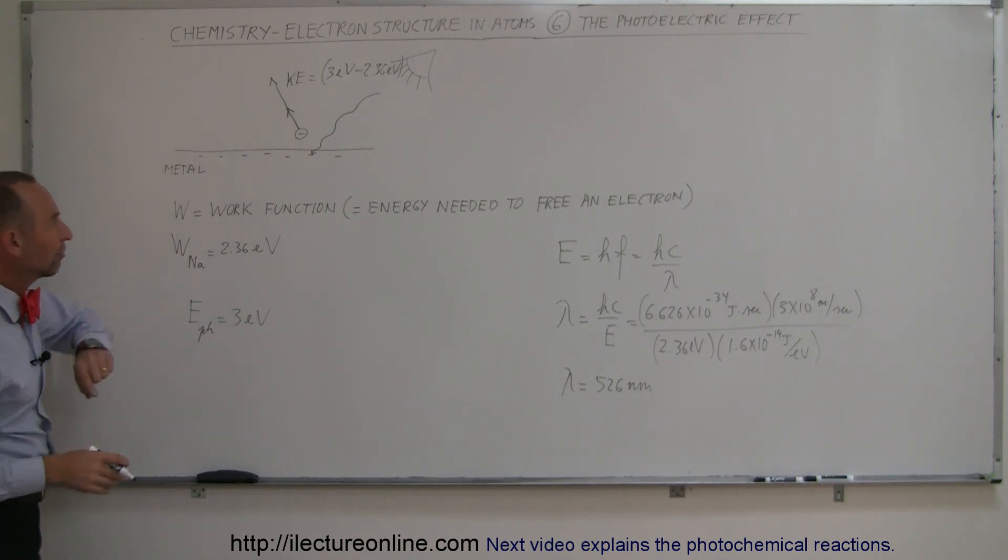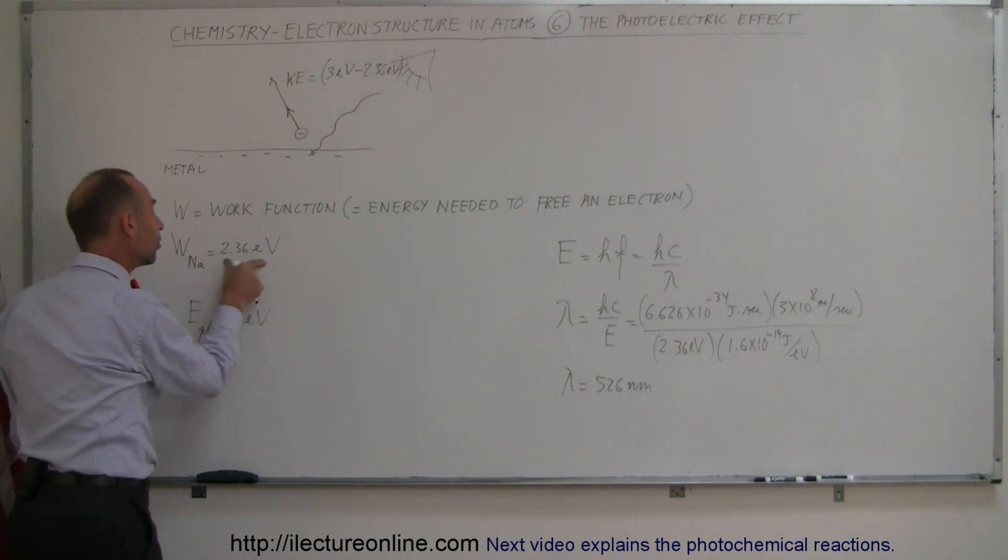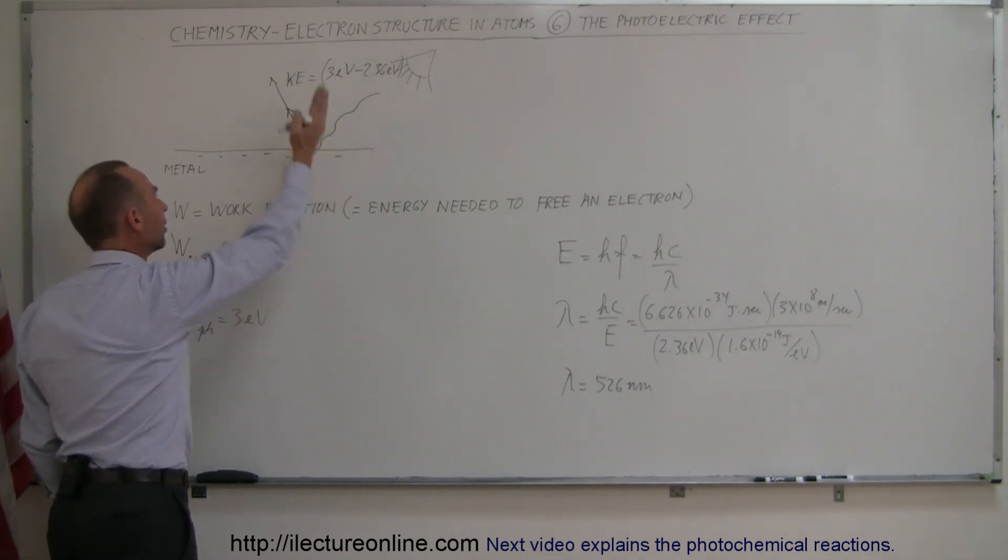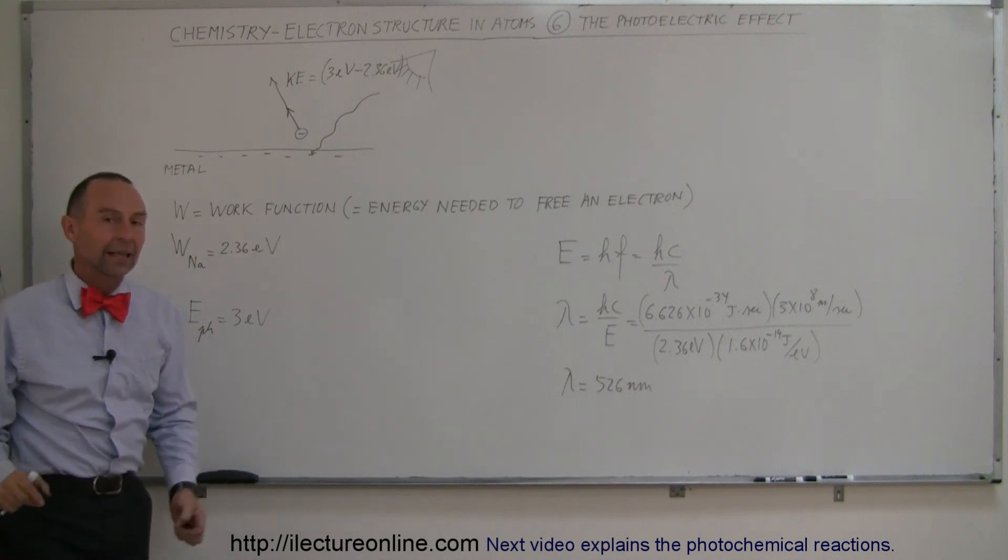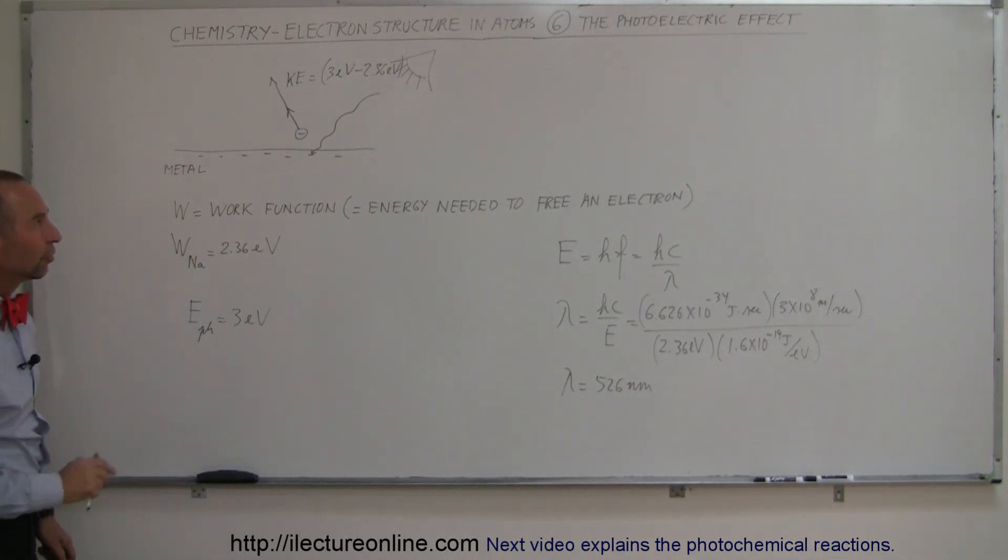The more extra energy it has, the faster it will fly away from the sodium. But, if it doesn't have at least this much, unfortunately, the electron will stay there, the photon will simply bounce off, and the electron cannot use that energy. So, that's, in short, the concept of the photoelectric effect, again, showing that energy is quantized. And because of this experiment that Einstein did to show that energy is quantized using the photoelectric effect, he got the Nobel Prize for the 1905 discovery. So, that was more than 100 years ago. So, that's the photoelectric effect.